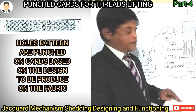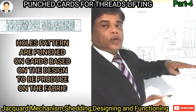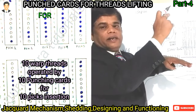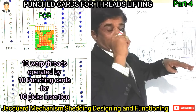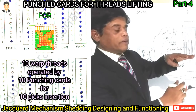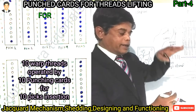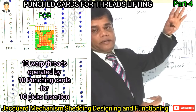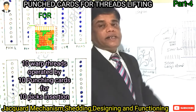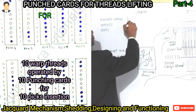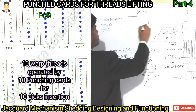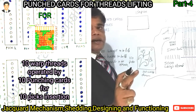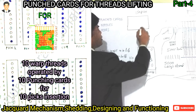For one pick, a shed will form. To insert one pick, a shed forms by lifting certain warp threads. How many warp threads are to be lifted? Then for the second pick or second color, how many warp threads are to be lifted — this is decided by the punching card. One punching card corresponds to one pick.